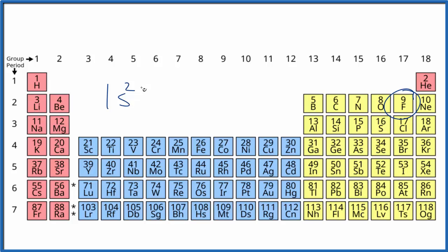Second energy level, that's going to be the 2, this is the period here, it tells us the energy level. We have s1, s2, then we go over here to the p, so we're still in 2, so 2p 1, 2, 3, 4, 5, 2p⁵.